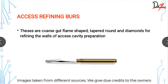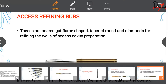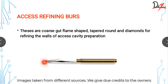Once you have the initial ditch, you use access refining burs — coarse gut film burs with a tapered round and diamonds for refining the walls of the access cavity. The endo-Z bur, also by Dentsply, has a non-cutting tip, so only the shank cuts — you search for canals without going deep, reducing the chance of perforation. Please use endo axis and endo-Z burs for access opening; they cost about 450 rupees each versus 100-150 for a normal bur, but you'll see a clear difference in de-roofing.